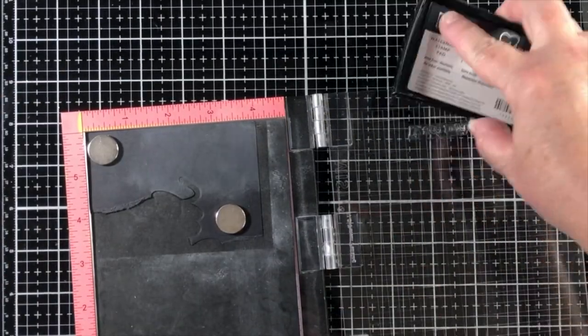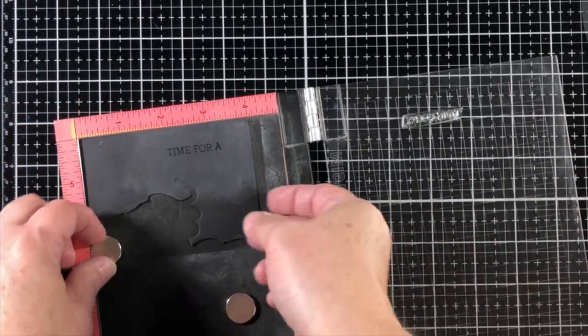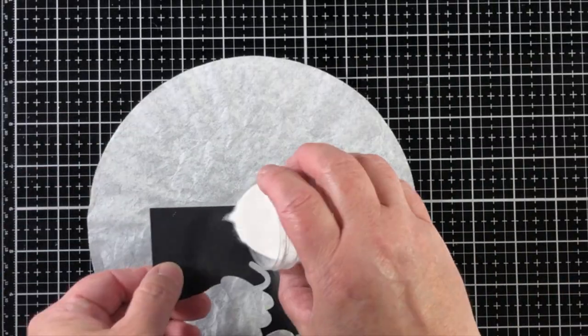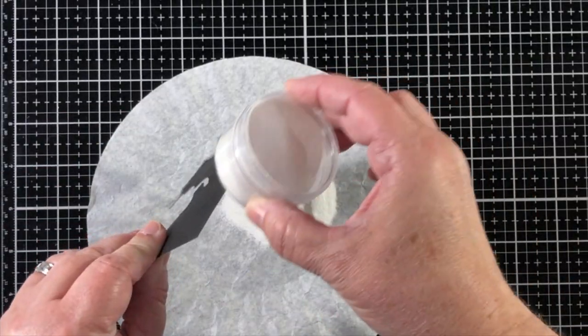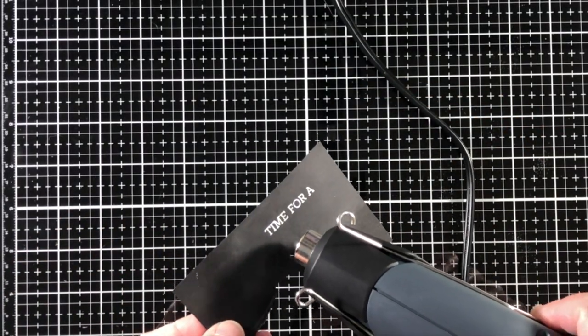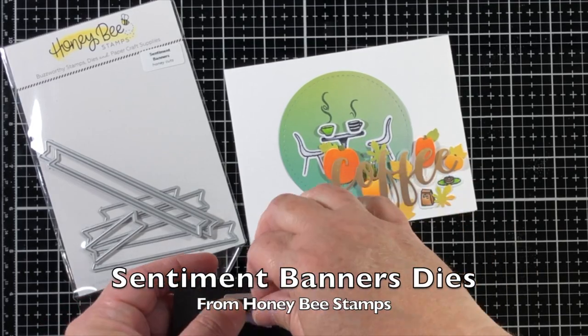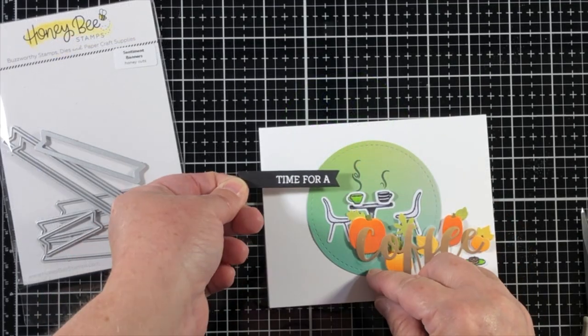I'm going to create the sentiment on a scrap of black paper and use white embossing. This says time for a and now we've got our coffee buzz word. This is going to really draw some attention to the card and the sentiment.